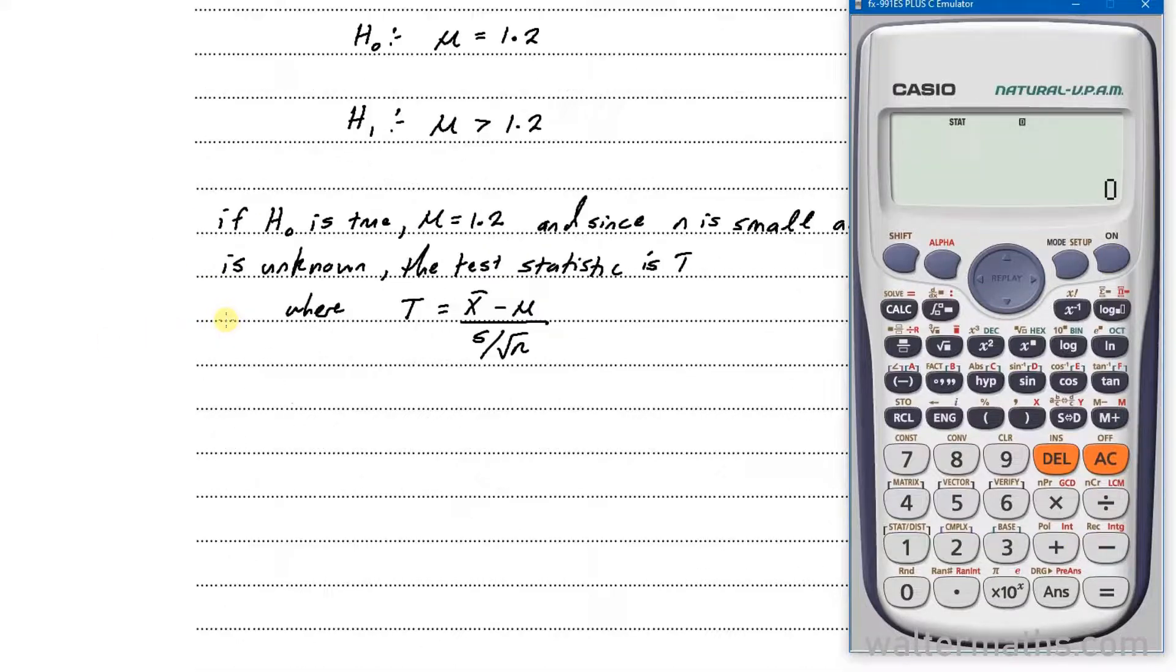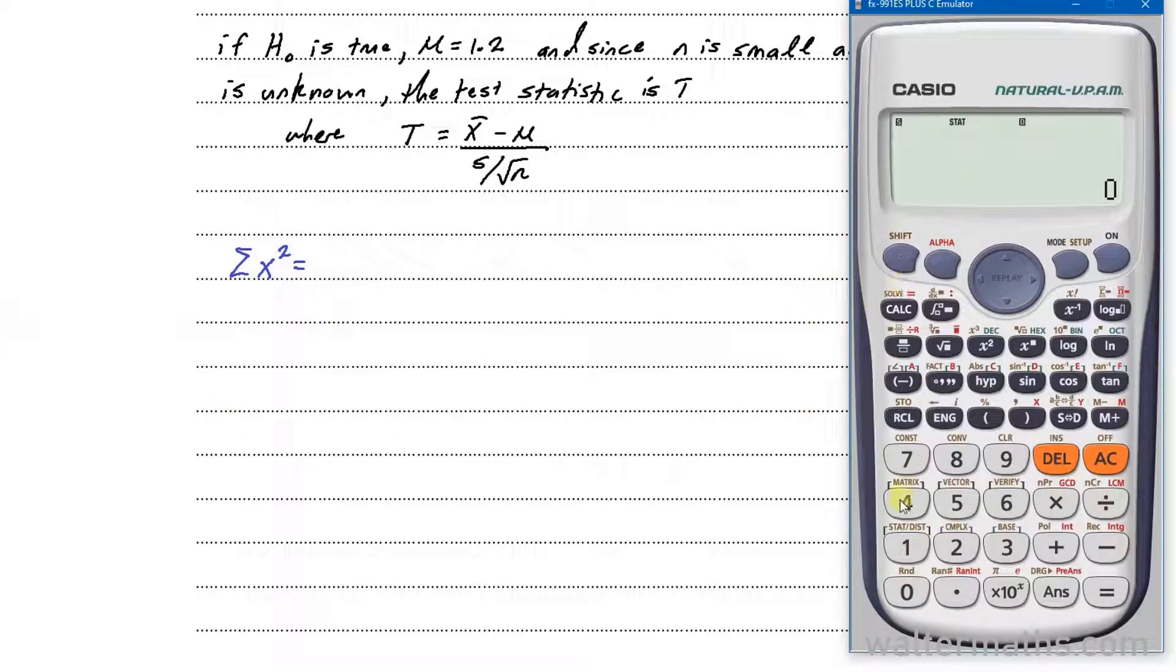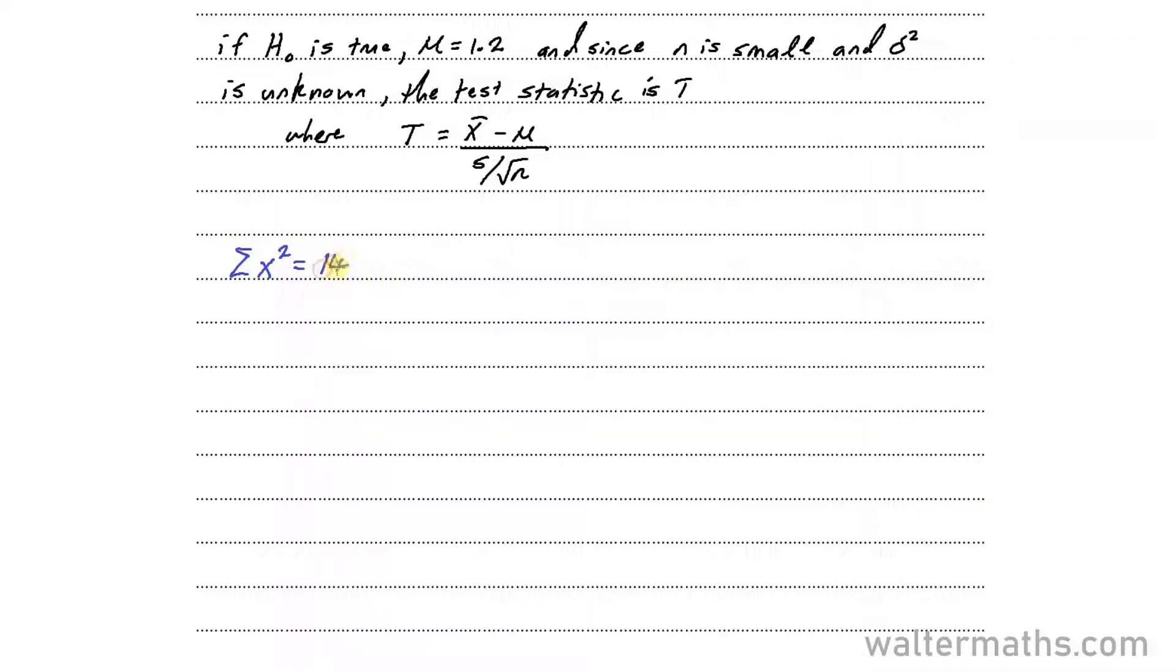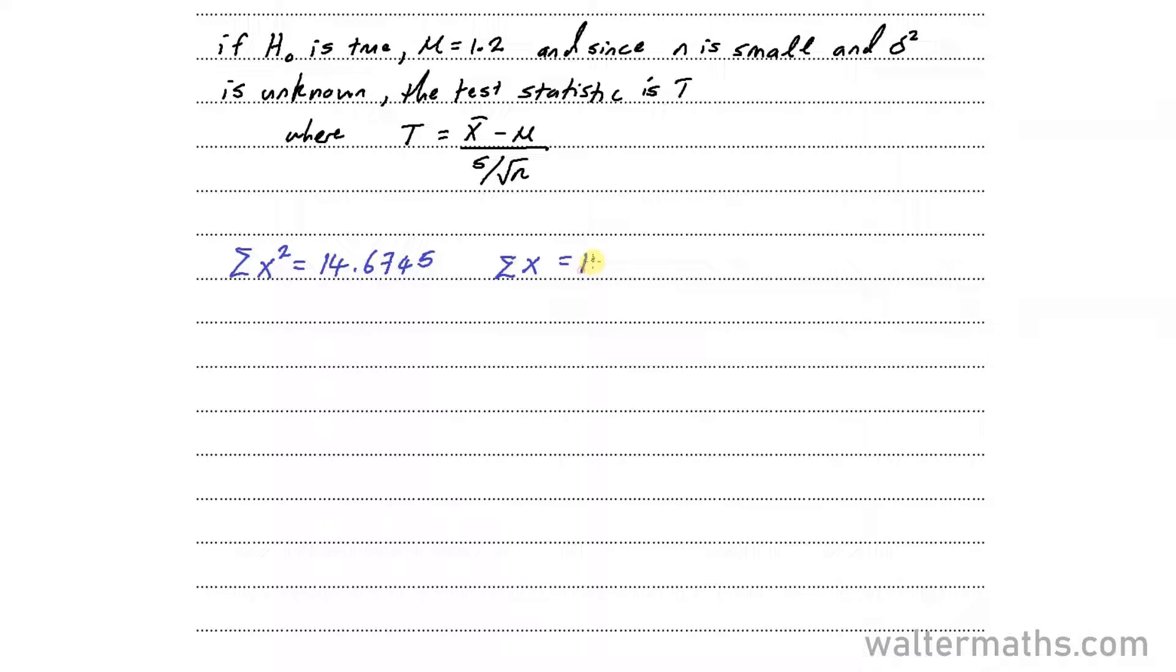Now that we have the data, we are going to need the sum of squares. For the sum of squares, we will find it as shift, then 1, then sum 3. Sum of squares is option 1, and we get 14.6745. And we shall also need the sum of the numbers, and we get that as option 2 here, and it's 12.11.